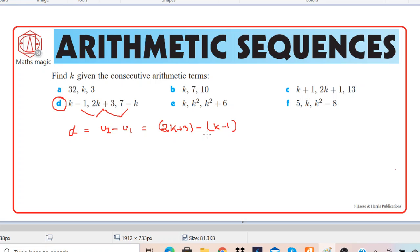So we can simplify this. This becomes 2k plus 3 minus k plus 1, and 2k minus k is k, and 3 plus 1 is 4.